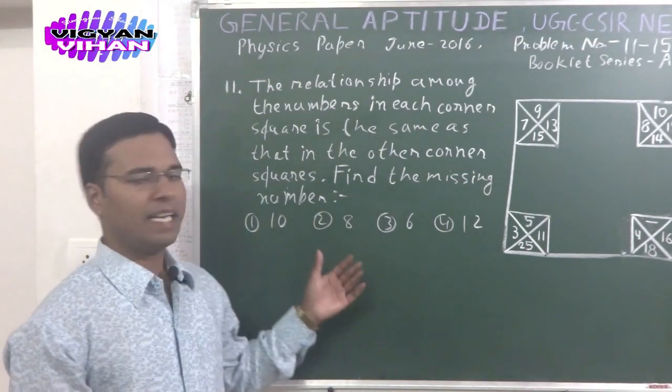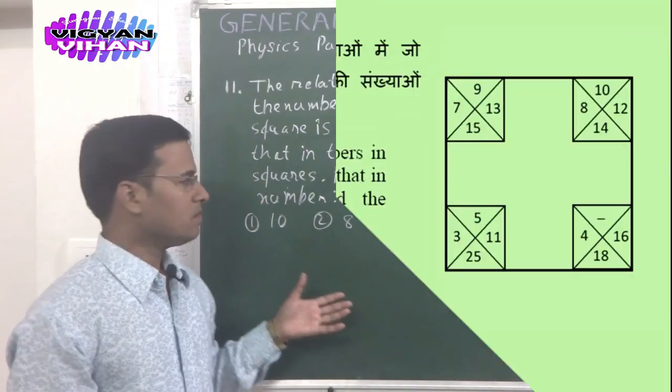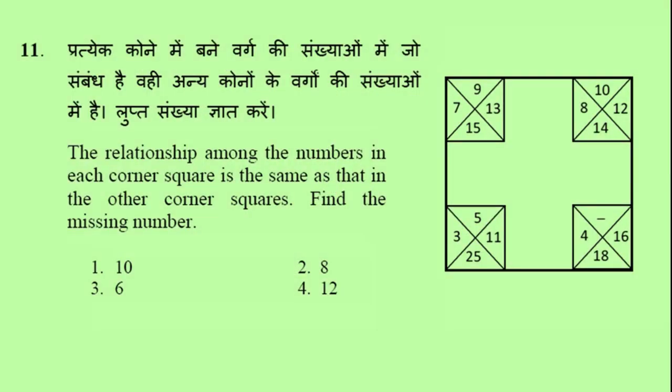Problem number 11 is the first problem of this episode. The relationship among the numbers in each corner square is the same as that in the other corner squares. Find the missing number. There is a puzzle consisting of 15 known numbers and we will have to find out the unknown number.